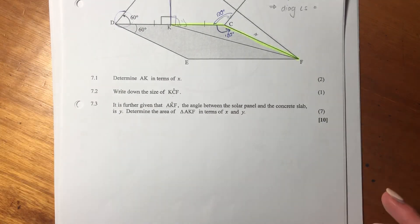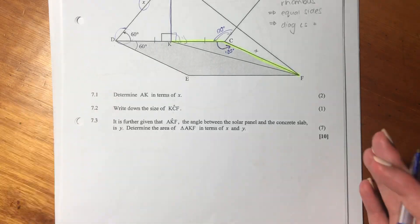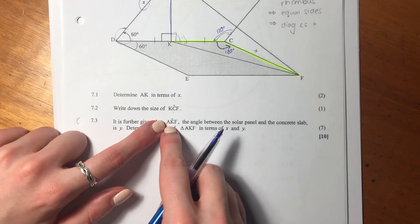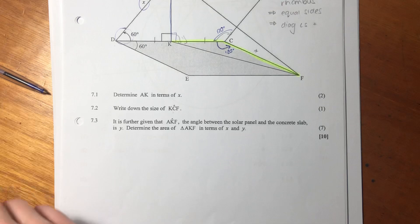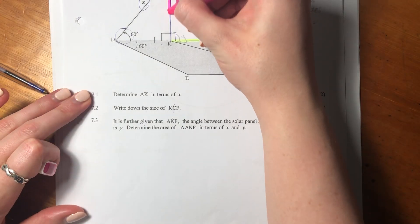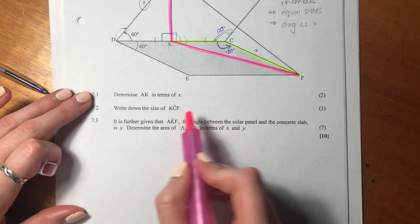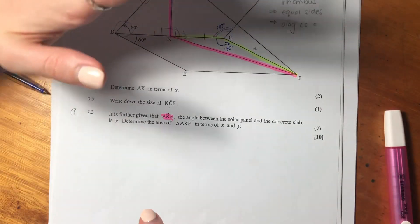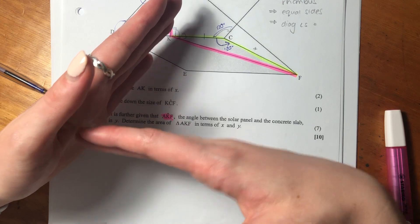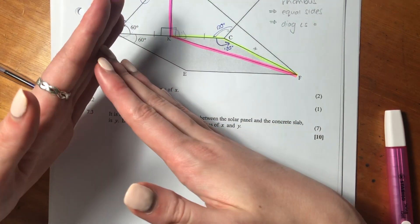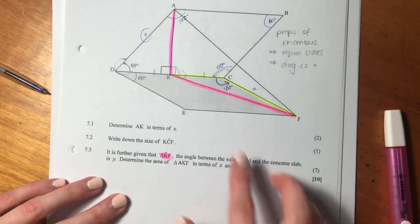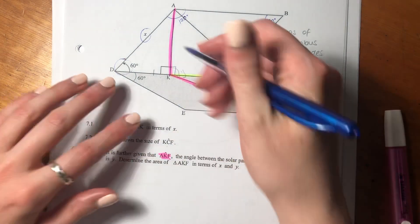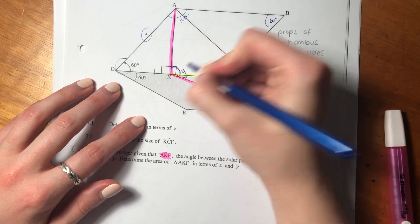Let's move on to 7.3. This is the most difficult question here and it's got a lot of meat in it. It says if it is further given then AKF - that's this one - the angle between the solar panel and the concrete slab is Y. I've labeled it here and we're calling that Y.